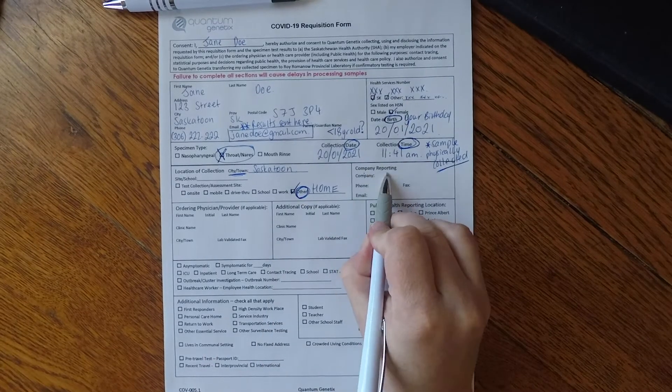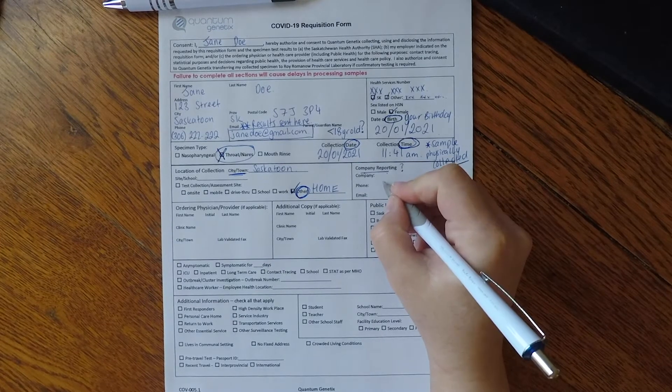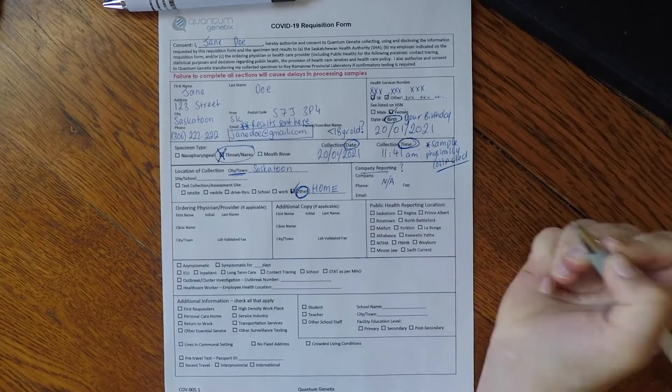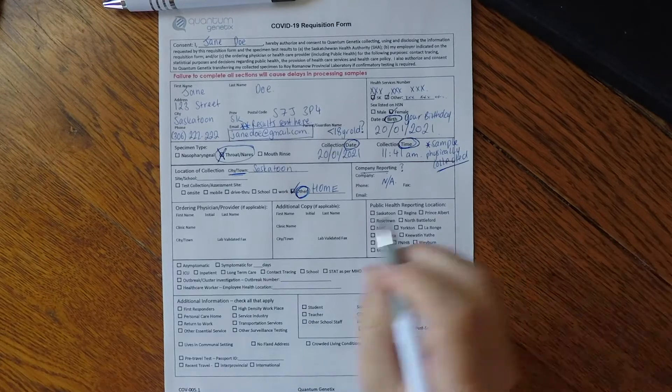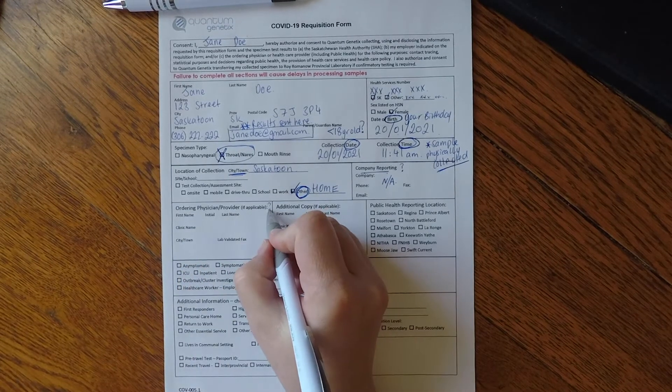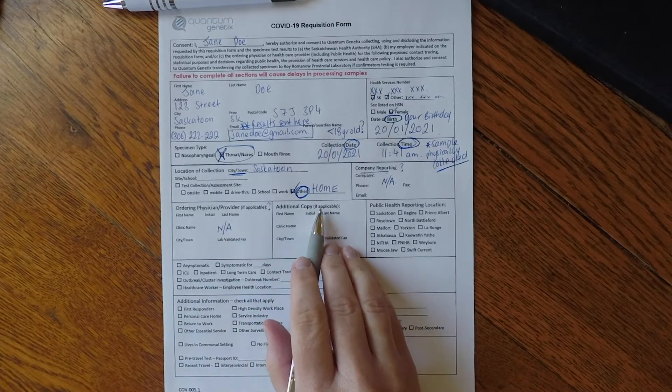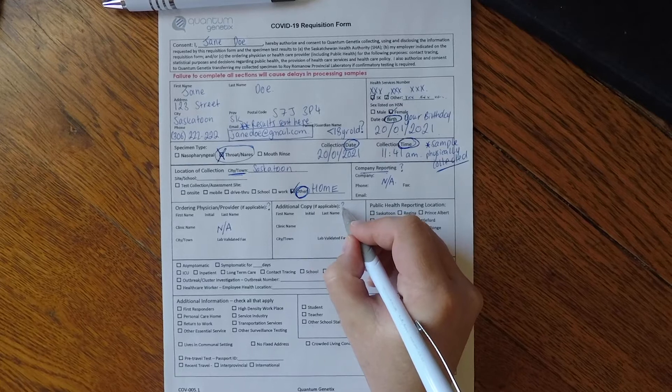The next few boxes only apply if you are performing the COVID-19 test for an employer or on behalf of an ordering physician. If you would not like any additional copies sent then please put N/A in these three boxes.